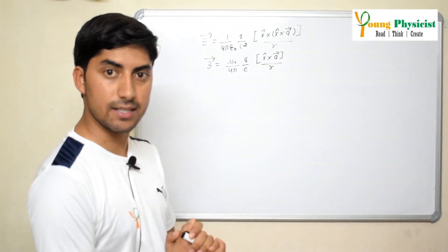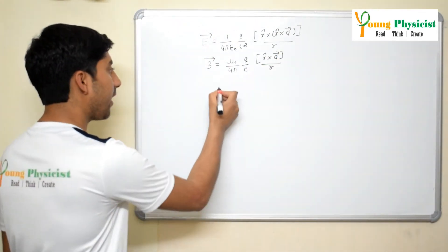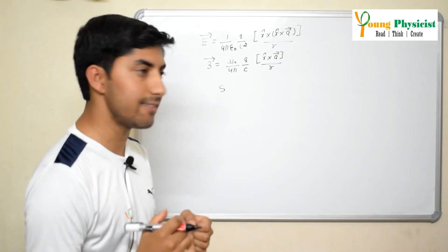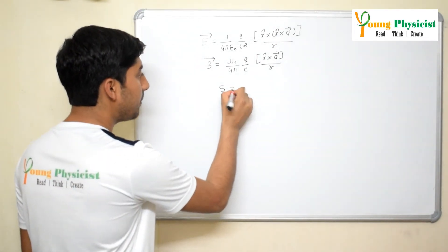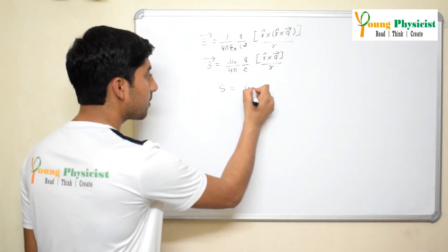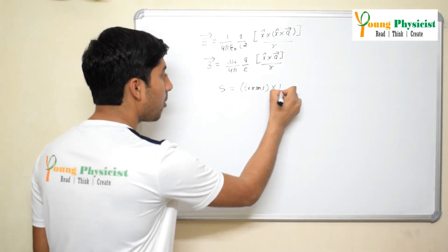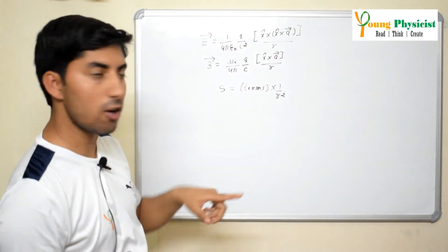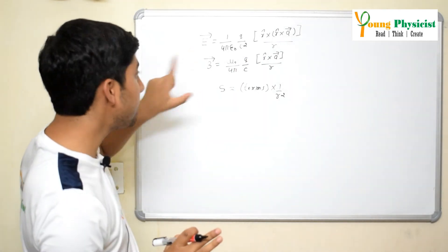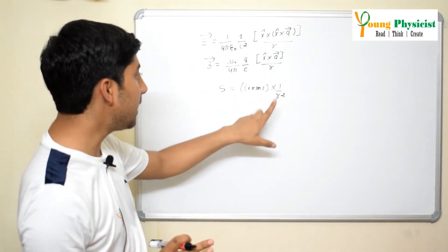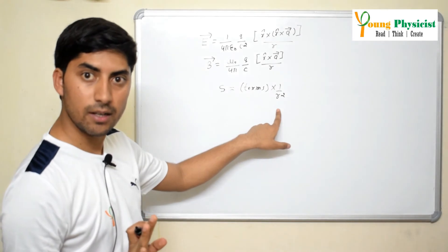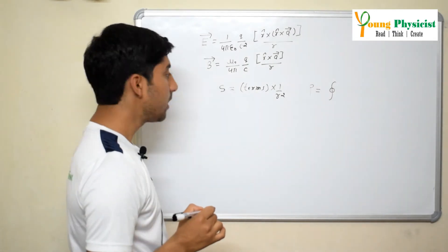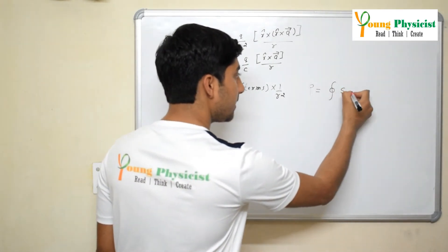Now let's calculate the magnitude of the Poynting vector for the accelerated charge particle. The Poynting vector will equal some terms multiplied by 1/r². Because both E and B each have one factor of r, when you take the cross product E × B, there will be a term involving 1/r².